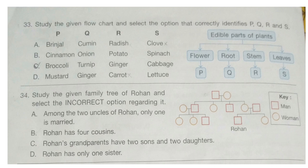Question 34. Study the given family tree of Rohan and select the incorrect option regarding it. A. Among the two uncles of Rohan, only one is married. B. Rohan has four cousins. C. Rohan's grandparents have two sons and two daughters. D. Rohan has only one sister.